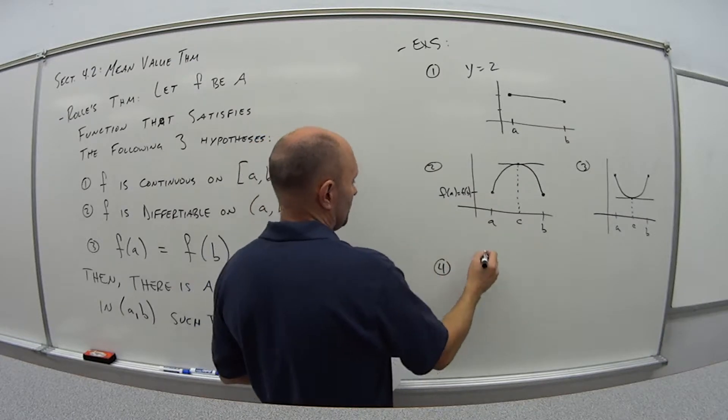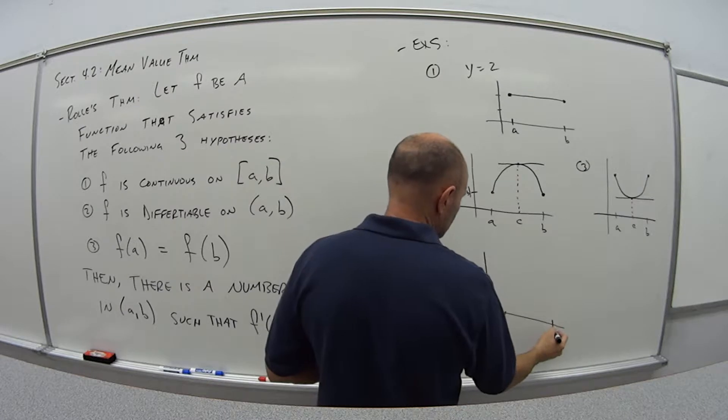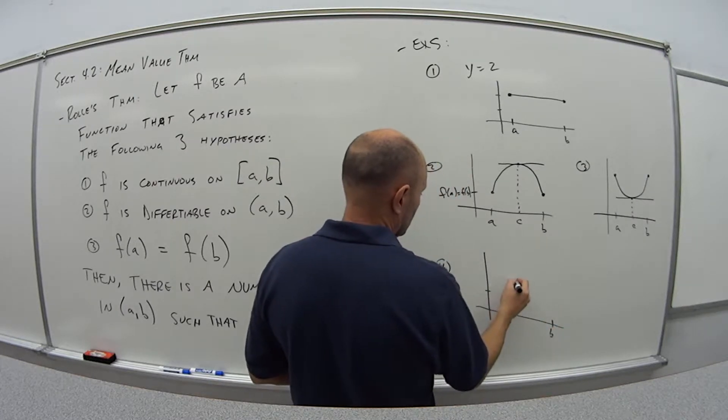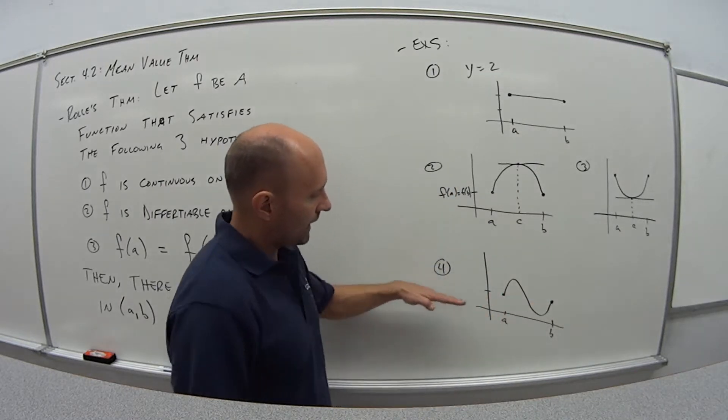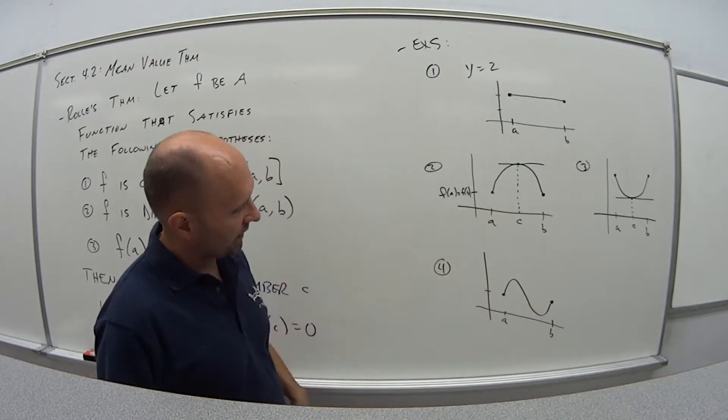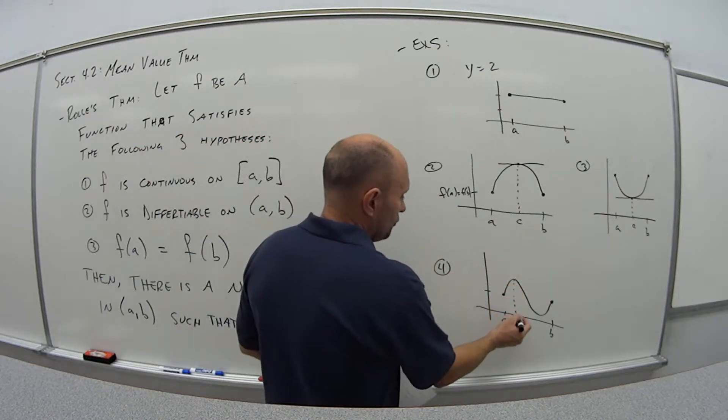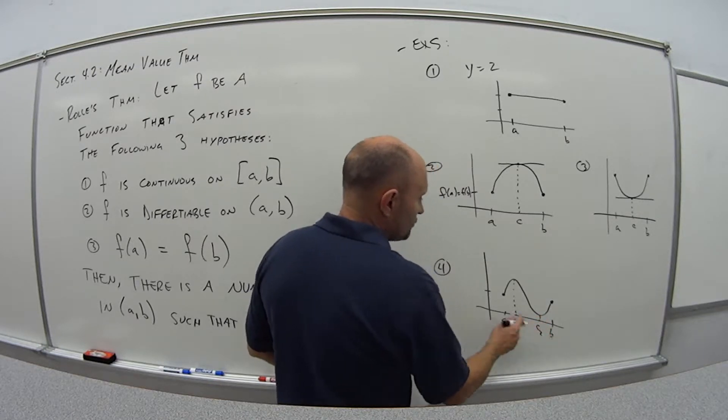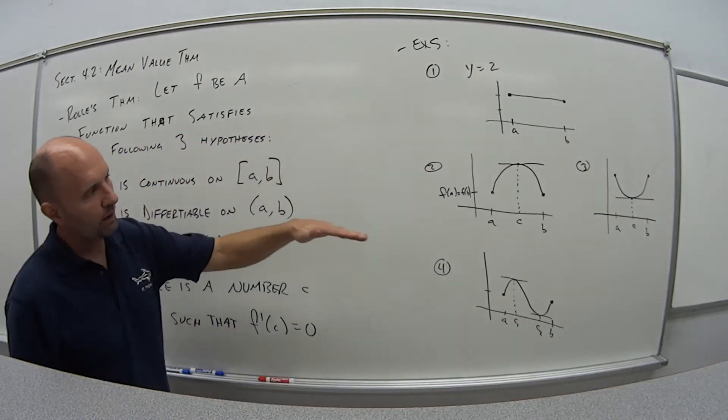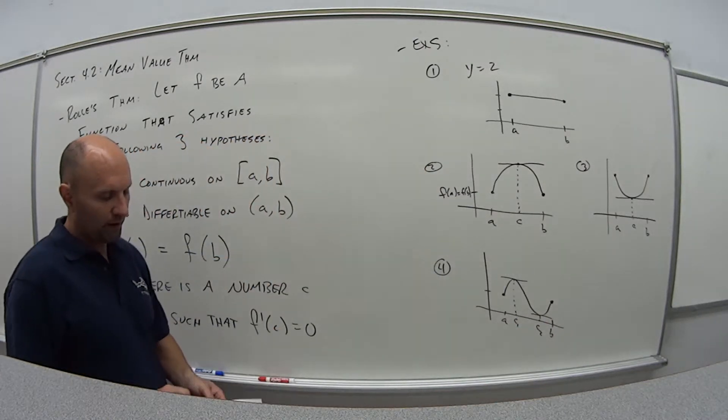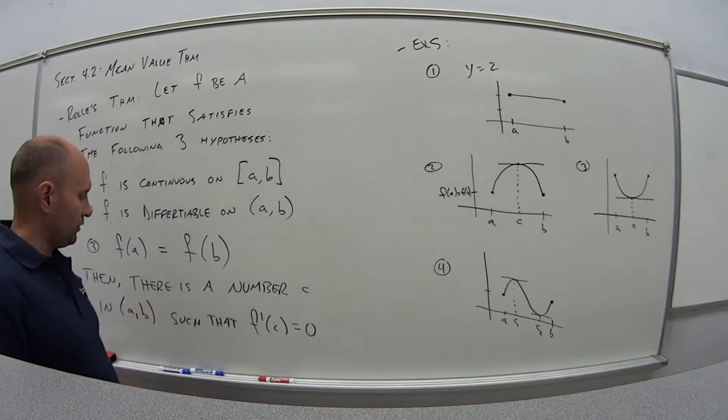And the fourth possibility. Again, a and b have the same function value. And I actually have two numbers, call it c1 and c2, within that interval where the derivative is equal to zero, where there's a horizontal line, where there's a max or a minimum value of that function.